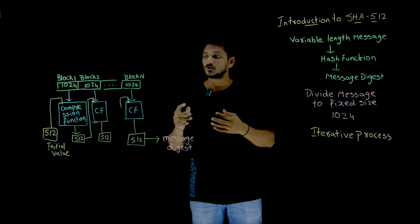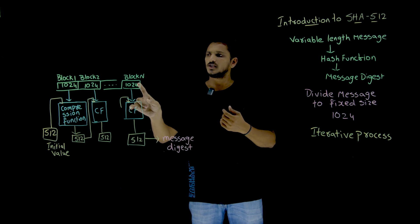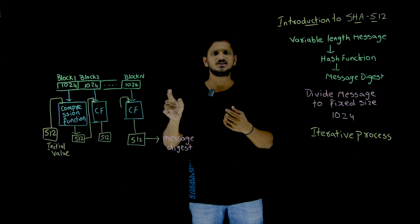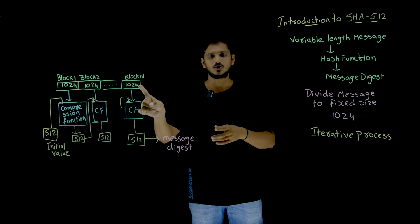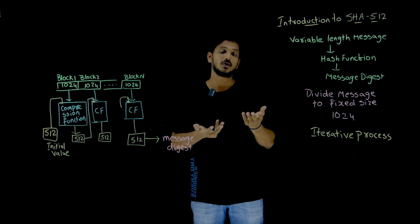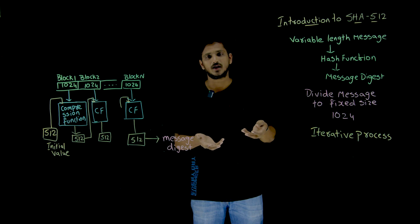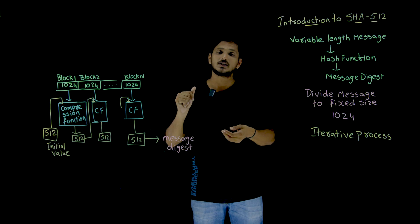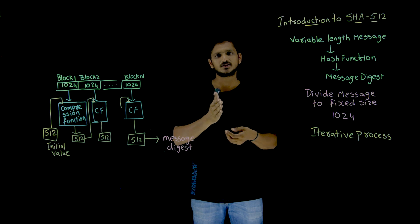And the point you need to understand: in our next class, what we are going to discuss is, see here in the last block, is it definitely going to divide the message into the size of 1024? In the last block, it may be 1023 bits or it may be 512 bits, like that. So what we have to do? How the padding bits will be added? How the length of the message will be identified? All those things will be discussed in our next class.